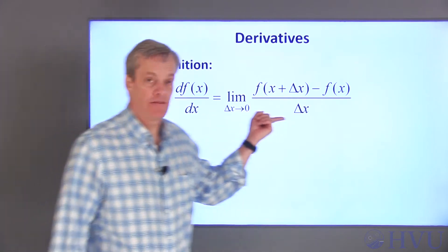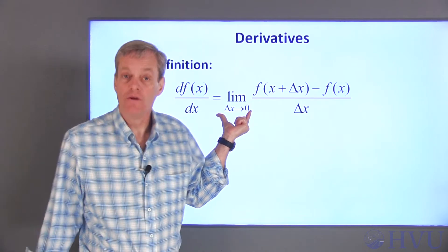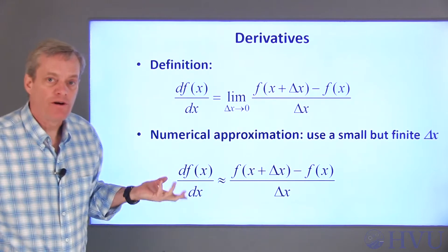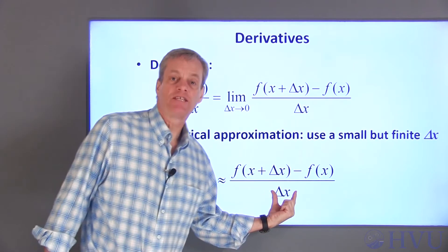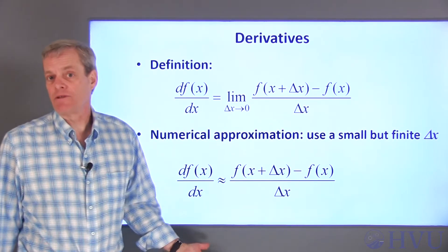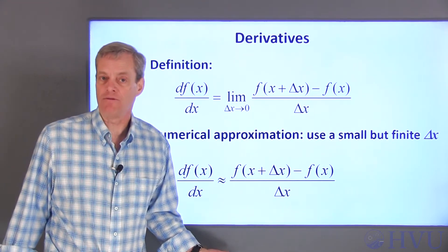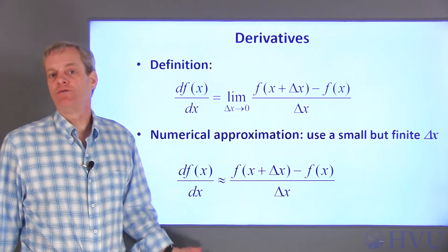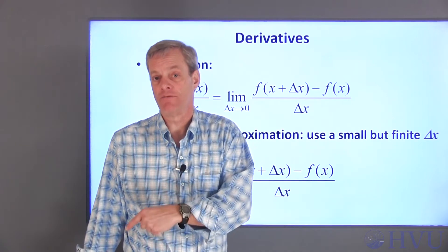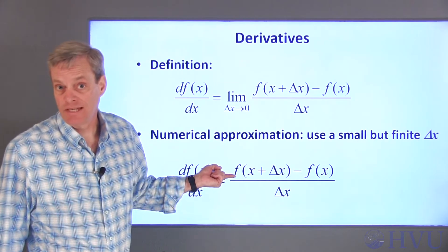Derivatives are defined by calculating the slope of a line from two points that are infinitesimally close together. Numerically, we can't let delta x be zero. For our numerical approximation of derivatives, we just chose a small delta x and hoped that the approximation was good enough. Then we checked whether the approximation was good enough by reducing delta x until the solution converged to some consistent value. A similar approach can be used to solve differential equations by substituting this formula in for the derivatives.